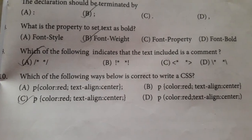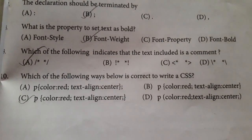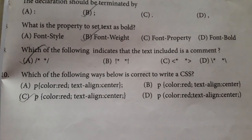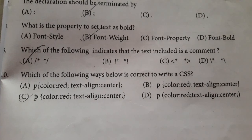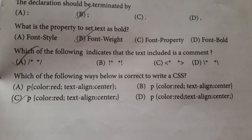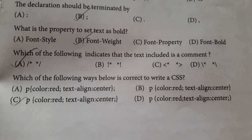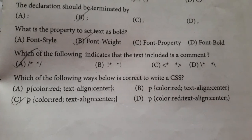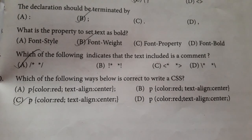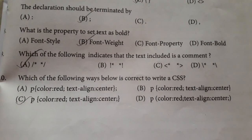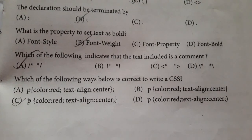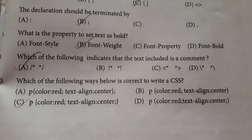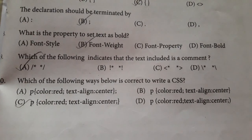Question number ten: which one of the following ways is correct to write a CSS rule? Option A: p { color: red; text-align: center; }. Option B: p { color: red; text-align: center }. Option C: p { color: red; text-align: center; }. Option D: p { color: red; text-align: center; }. Answer is option C: p { color: red; text-align: center; }.